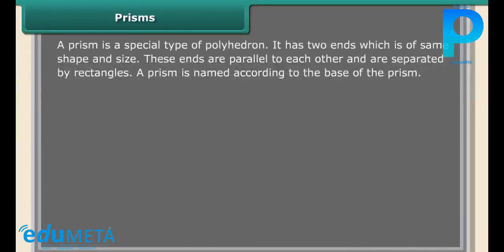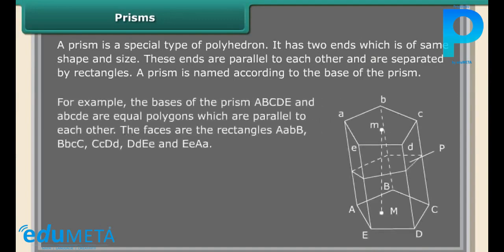Prism. A prism is a special type of polyhedron. It has two ends which are of the same shape and size. These ends are parallel to each other and are separated by rectangles. A prism is named according to the base of the prism. For example, the bases of the prism ABCDE and abcde are equal polygons which are parallel to each other.